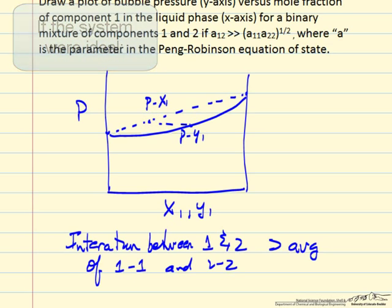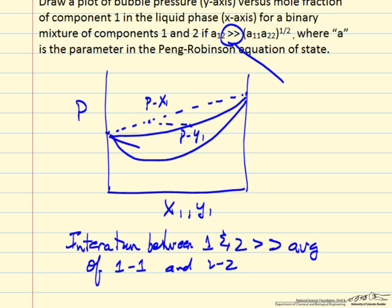For this system, the pressure is going to be lower. How much lower? We don't know exactly, except it says it's much greater. So it might be reasonable to assume we have something like an azeotrope.